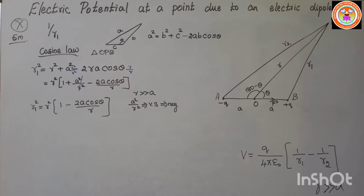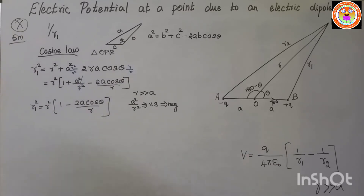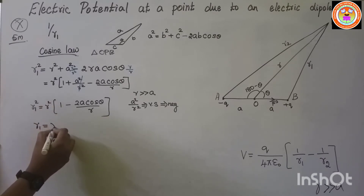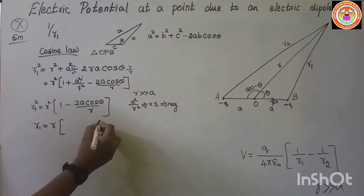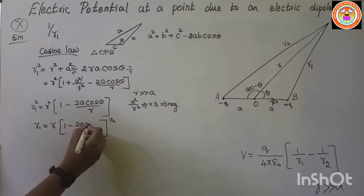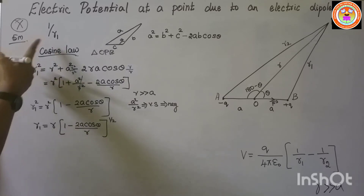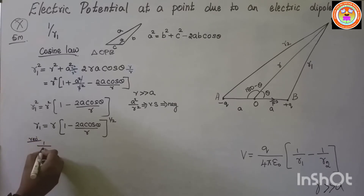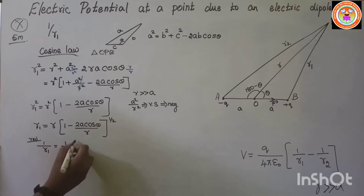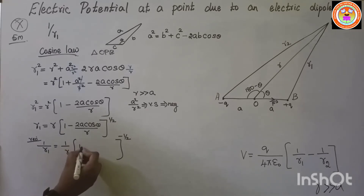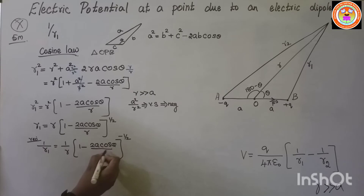Taking the square root: r1 = r × (1 − 2a cosθ/r)^(1/2). Taking the reciprocal to get 1/r1: 1/r1 = (1/r) × (1 − 2a cosθ/r)^(−1/2).